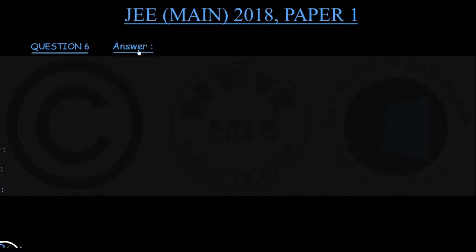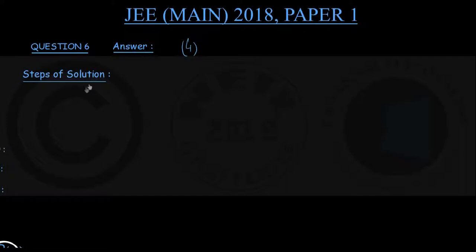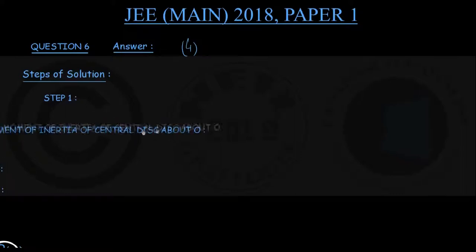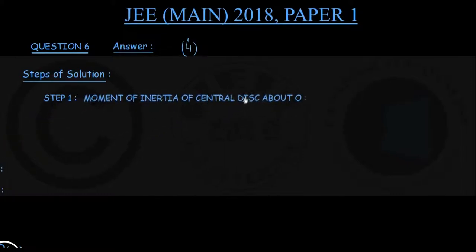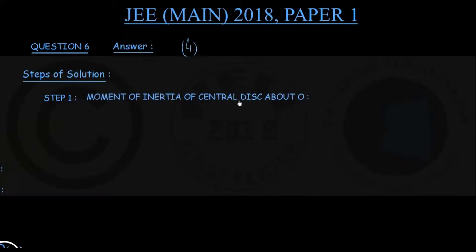For question number 6, the correct option is option 4. To show the steps of solution, as you remember the figure given in the question, you can follow what I am doing. In step number 1, we shall find out the moment of inertia of the central disk. Out of the 7 disks, the one that is central — whose center is O — we will find that disk's moment of inertia about the point O.